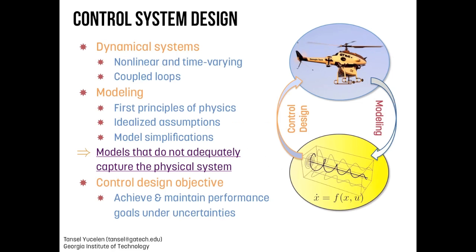Why adaptive control? Here is a helicopter from our laboratory — the Unmanned Aerial Research Facility at Georgia Tech. We deal with such systems, and these systems are basically nonlinear, have time variations in their dynamics, multi-inputs, multi-outputs, and hence coupled loops.